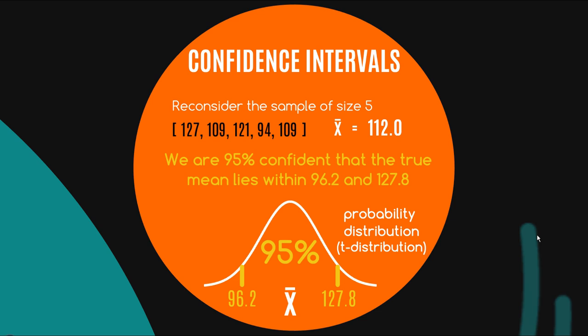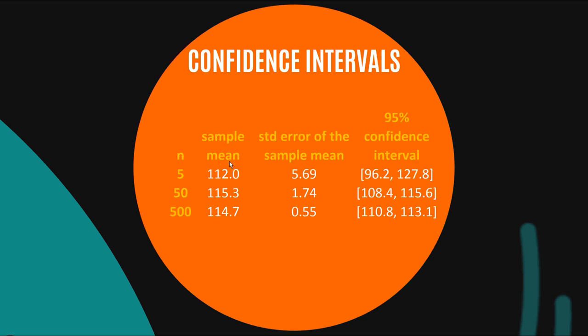So what we can say now is that we're 95% confident that the true mean lies within 96.2 and 127.8. Now, again, the sticklers amongst you would tell me that this isn't quite the correct interpretation of a confidence interval, and I respect you if you are thinking that. For the purpose of this video, I'm going to leave it like this. But on a technicality, some people like to say 95% of similar intervals would contain the population mean, and that's technically more correct. But I'd prefer not to open that can of worms in this video. This interpretation, for all practical purposes, is fine.